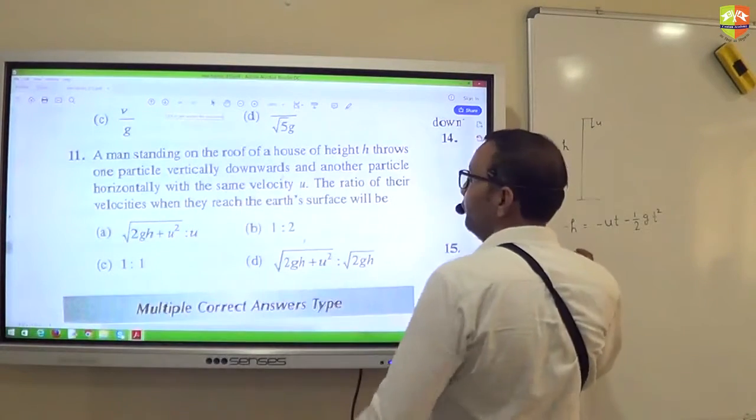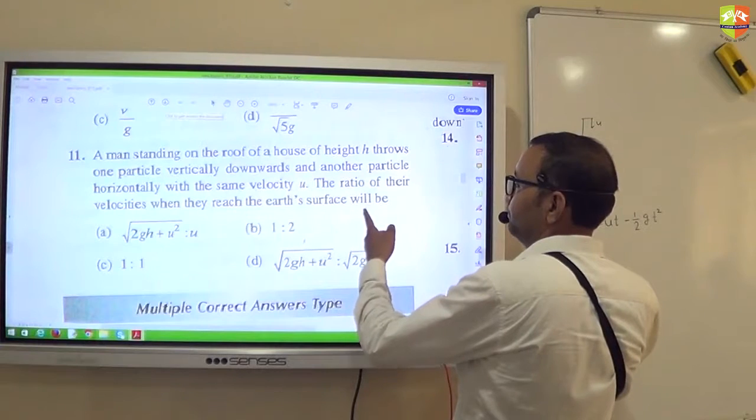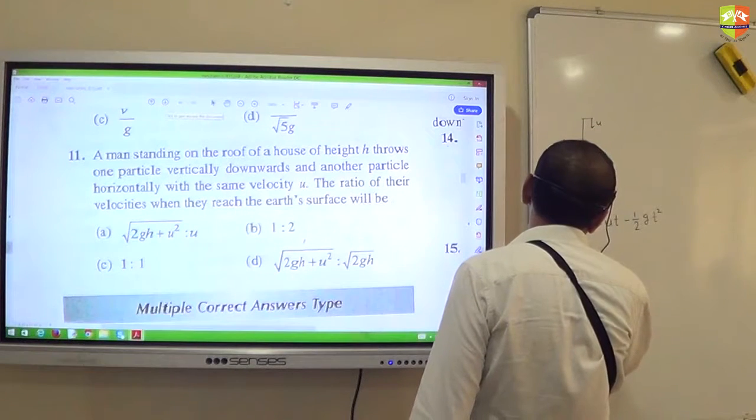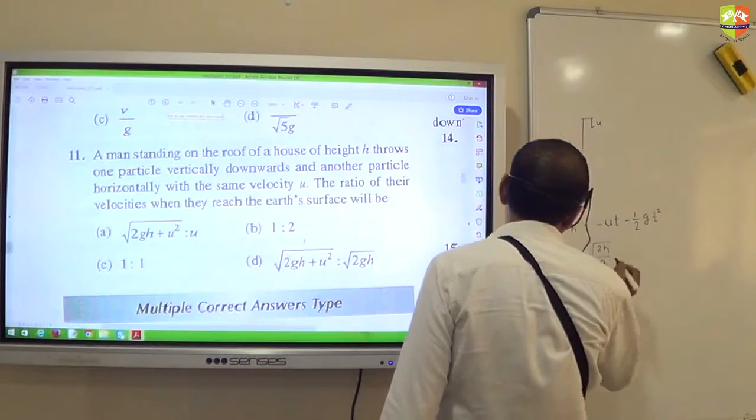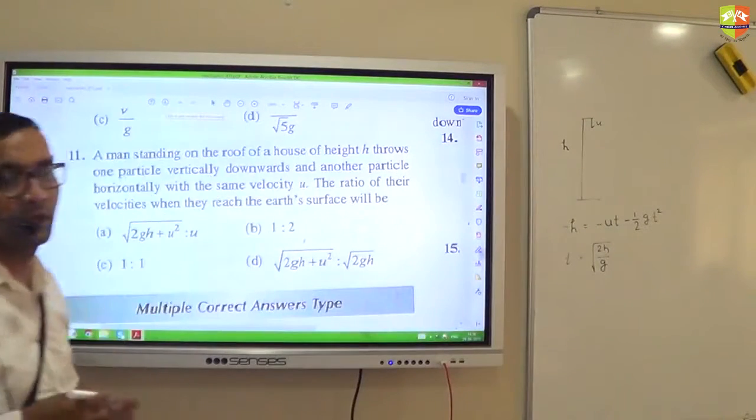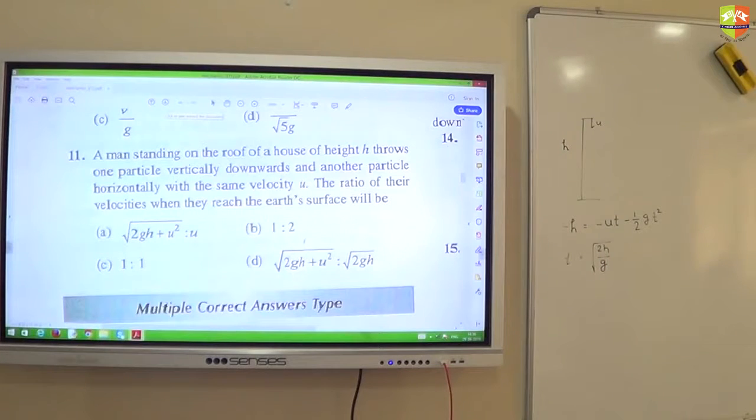From this we will get the time it will take to go down. And if it is thrown horizontally, then time will be equal to root over 2h by g. So what is the answer now? It is not 1 is to 1 or 1 is to 2. It is either c or d.